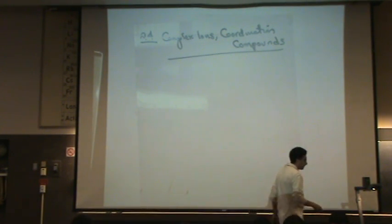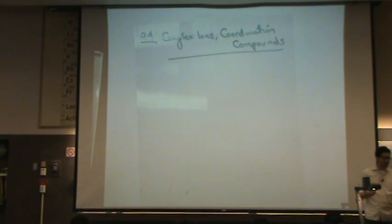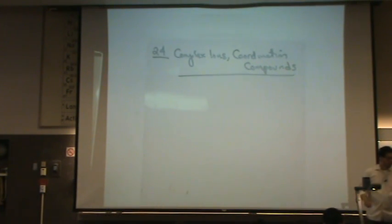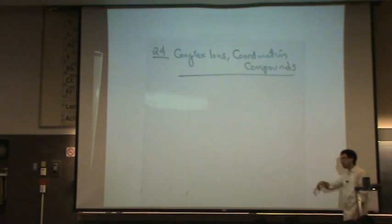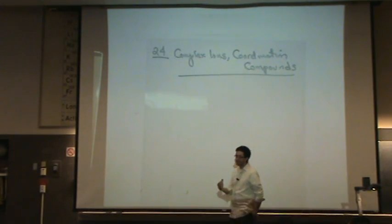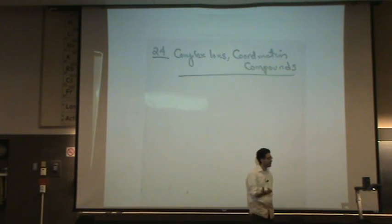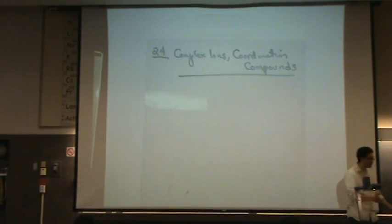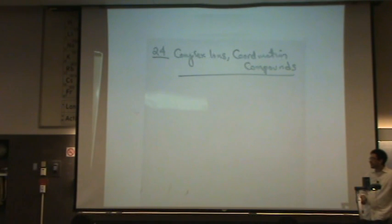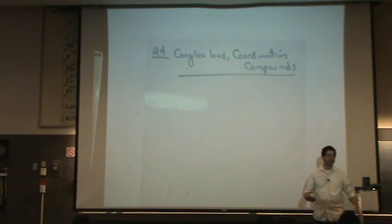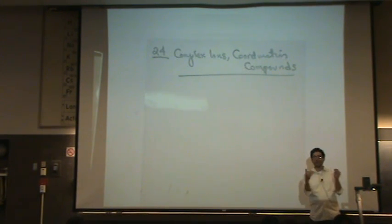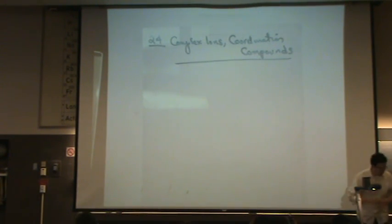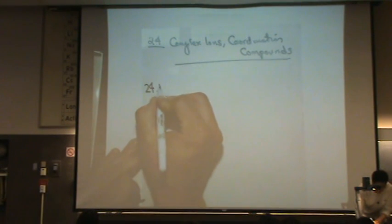For this chapter — transition metal compounds — we're going to explain the chemistry of transition metals. That's going to include color; a lot of transition metals have interesting colors. Why do they have those interesting colors? We're going to look at the structure, the bonding, things called ligands, oxidation of transition metals, and something called coordination of transition metals. To go over all this stuff, I need to give you a bunch of definitions so that we can get started.